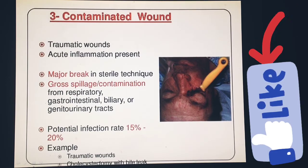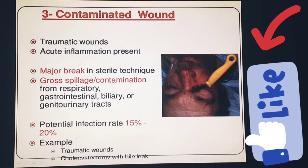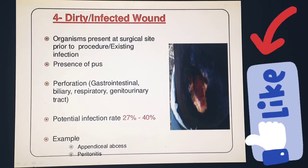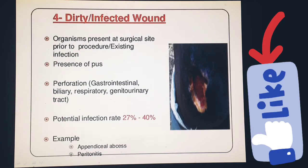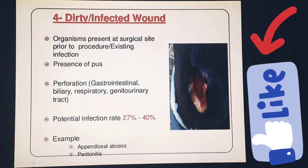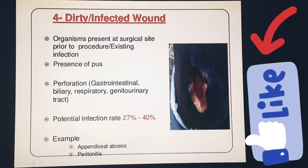In the dirty or infected wound, organisms are present at the surgical site with presence of pus and perforation. The potential infection rate is about 27 to 40 percent. Examples include appendiceal abscess or peritonitis.